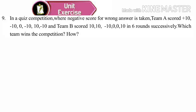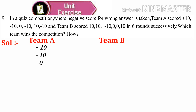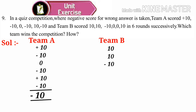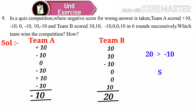Now, number nine: in a quiz competition where a negative score for a wrong answer is taken, Team A scored plus 10, minus 10, 0, minus 10, 10, minus 10 and Team B scored 10, 10, minus 10, 0, 0, 10 in six rounds respectively. Which team wins the competition? Team A total: 10 minus 10 is 0; 0 plus 0 is 0; 0 minus 10 plus 10 is 0; 0 plus 0 is 0; 0 minus 10 is minus 10. Sum is minus 10. Team B total: 10 plus 10 is 20; 20 minus 10 is 10; 10 plus 0 plus 0 is 10; 10 plus 10 is 20. Since 20 is greater than minus 10, Team B wins the competition.